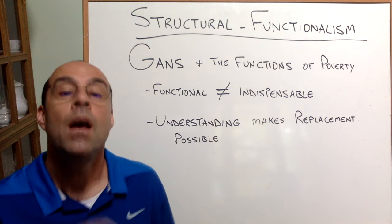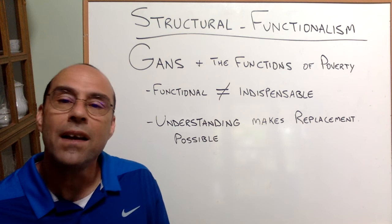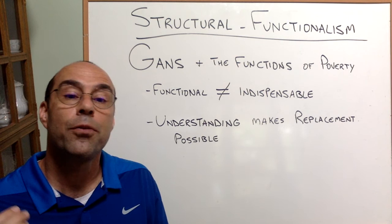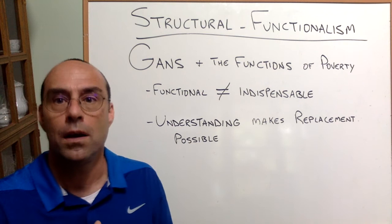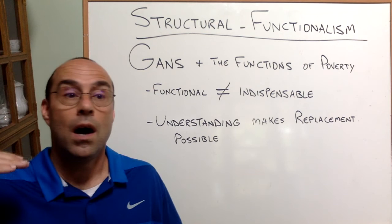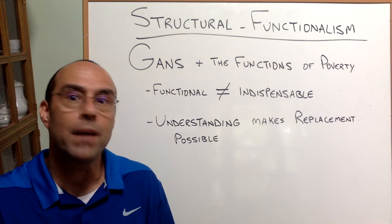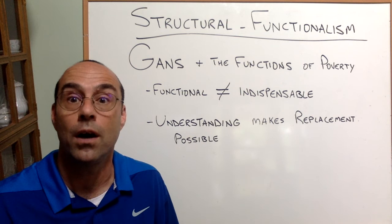To me, this is one of the great non-intuitive, creative uses of theory, to be able to think through, okay, so we want to, normally the people who want to cure poverty are the people that we're going to see about in an upcoming week of theory, which are conflict theorists who see everything as groups fighting for limited resources. Gans takes a different perspective.